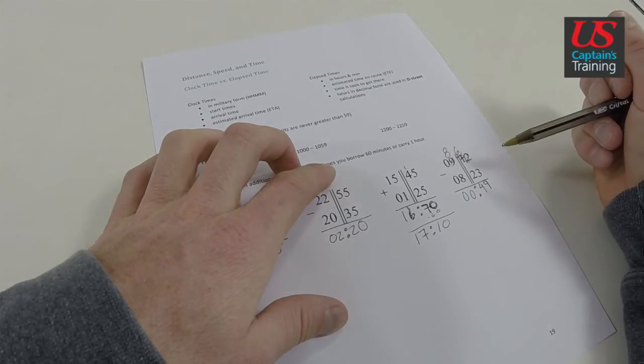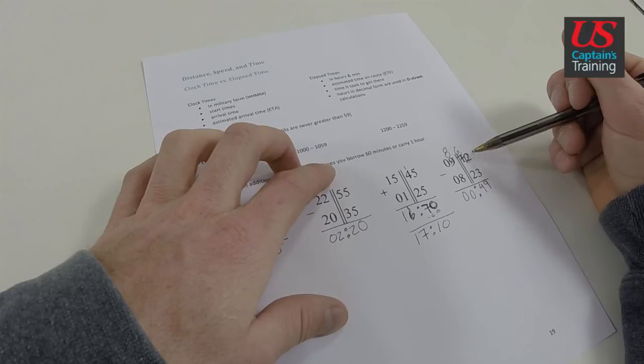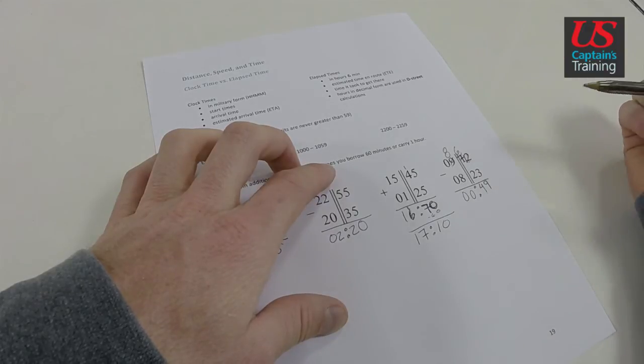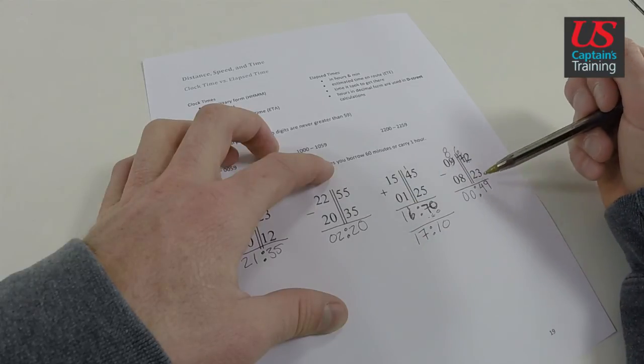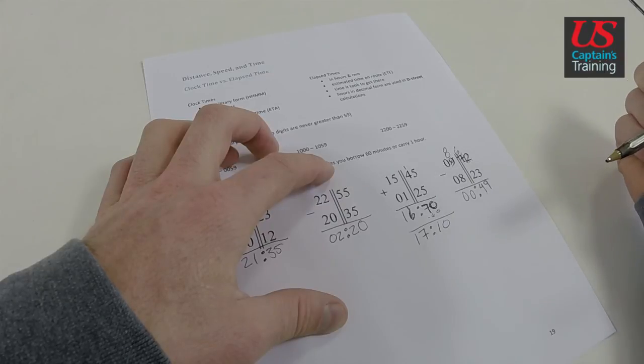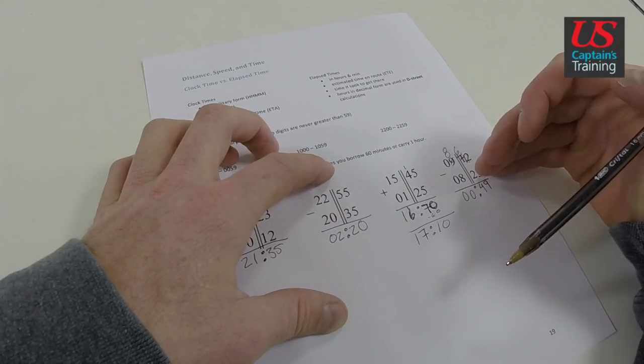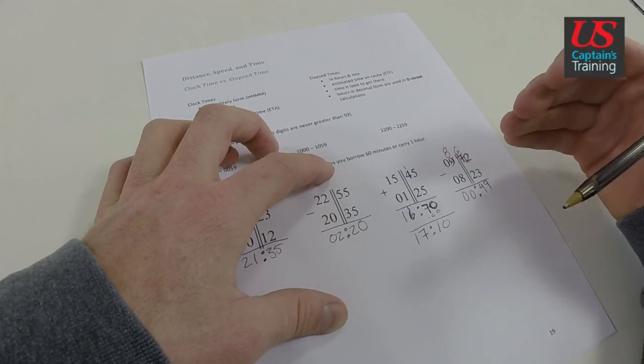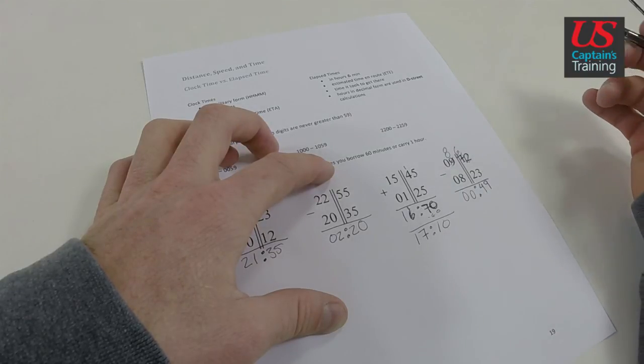And that's the same answer we came up with when we said, okay, from 823 to 9 is 37 minutes plus 12 is 49 minutes. So if you ever get confused with this adding, especially with subtracting, if you get confused about subtracting, make sure you just take a deep breath and a step back and try to do it in your head and say, okay, to get from the bottom number to the top number, you add this many minutes and then this many minutes to it. And you can usually double check these in your head.